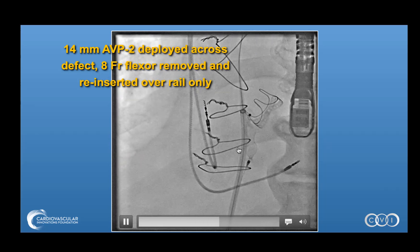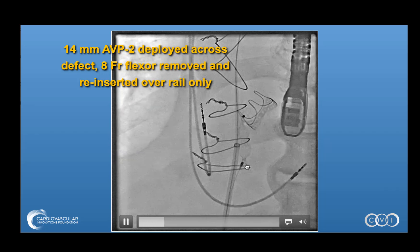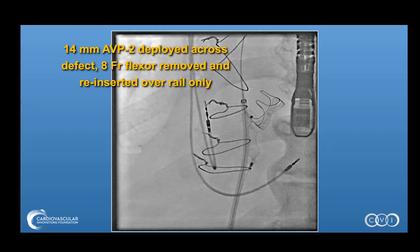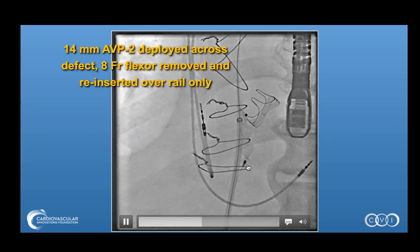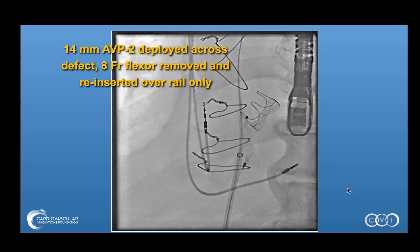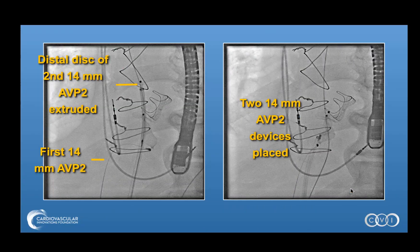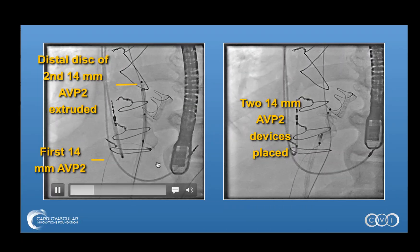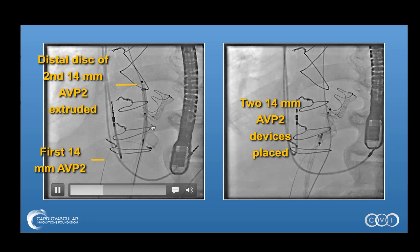It is reinserted over just that wire, and this is made possible by the 20 French dry seal sheath, because the dry seal has a balloon occlusion cuff which seals nicely around the flexor shuttle as well as the delivery cable. Without that balloon cuff, you would have bleeding in the femoral vein where the venipuncture took place. We then repeat the maneuver — this is following two plugs placed: the distal disc of the second device, and the first device has been placed.